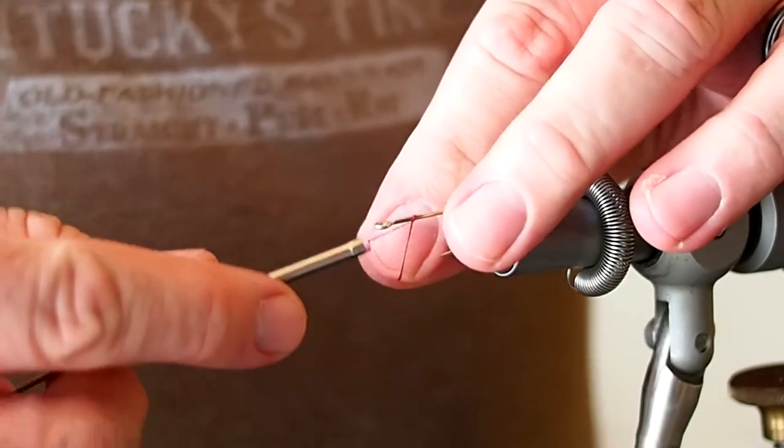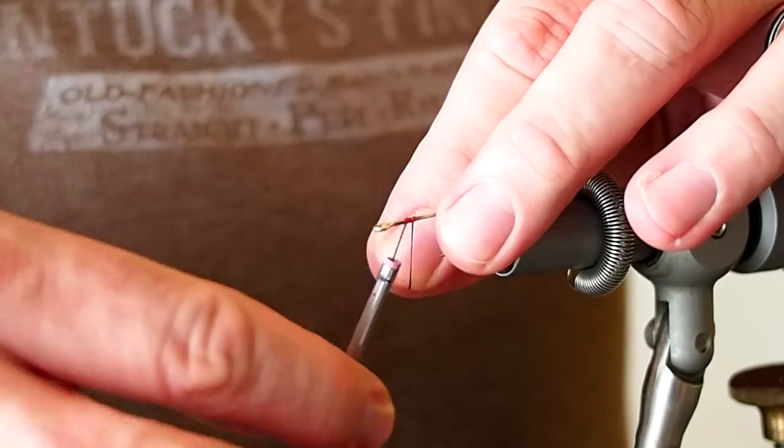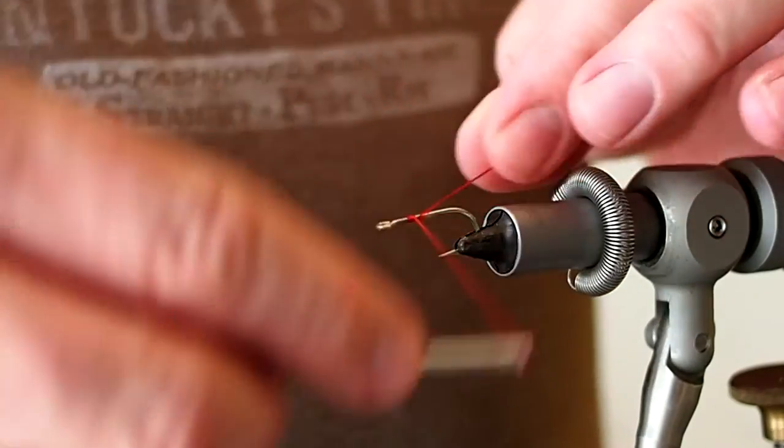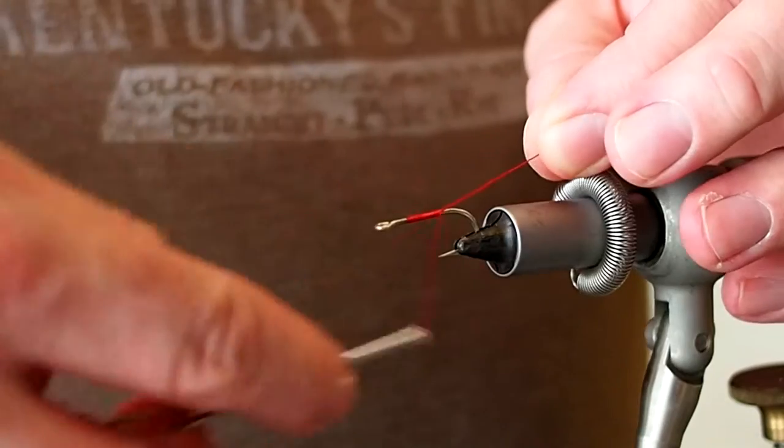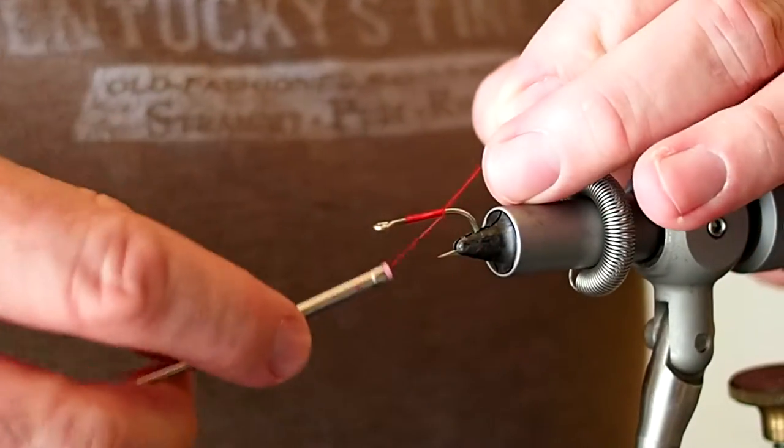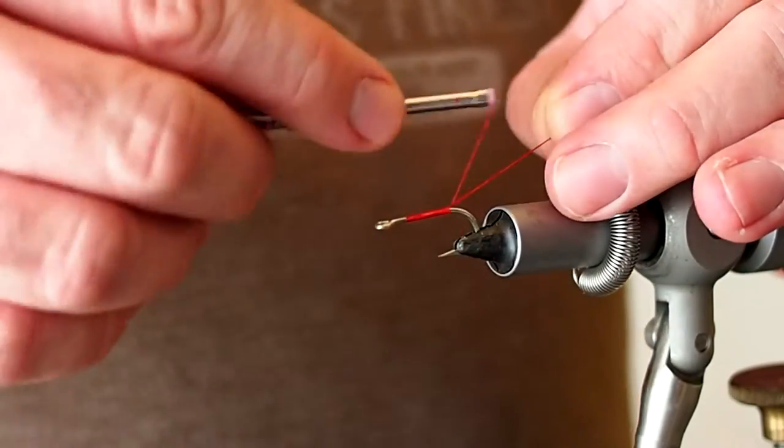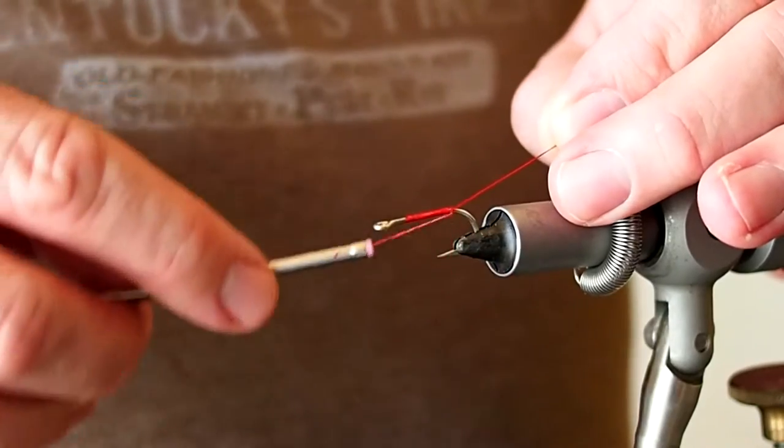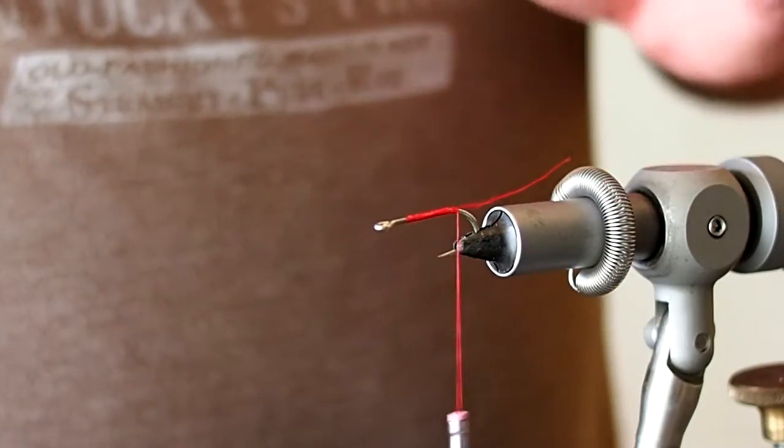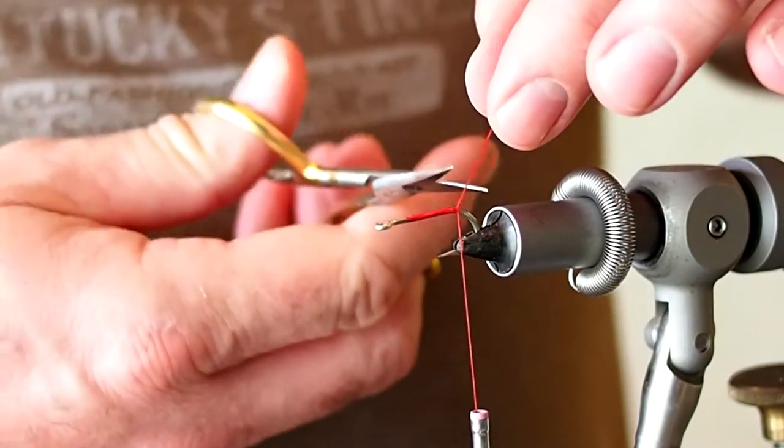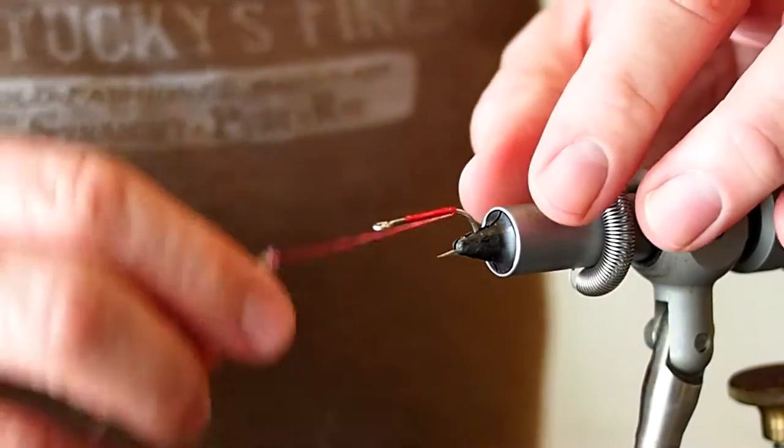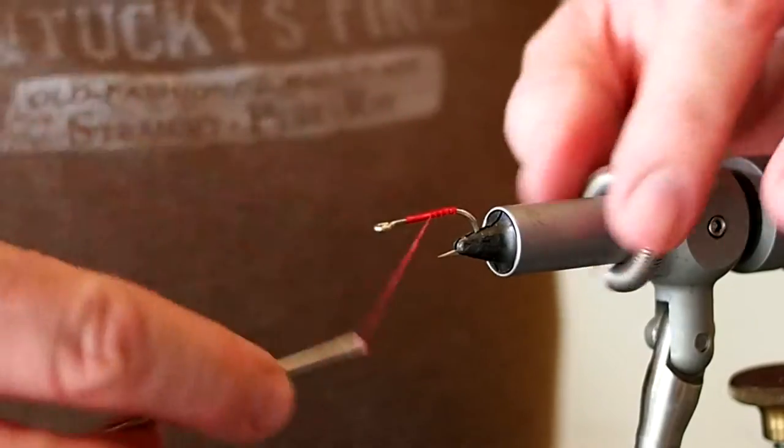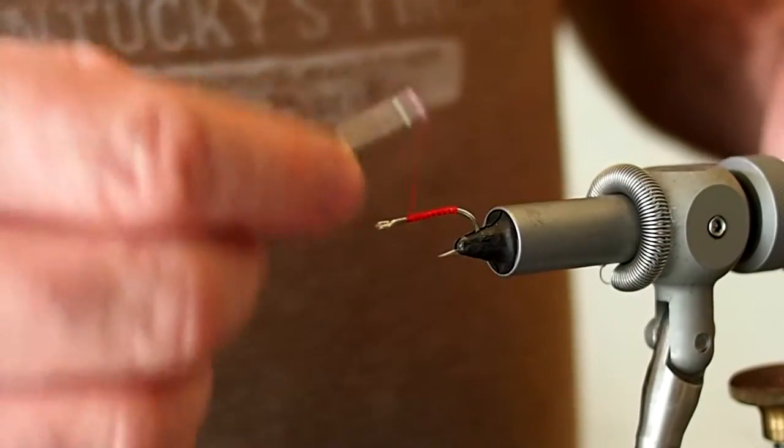I'm going to start my thread base two eye lengths behind the eye and take my thread down to the barb. I'll snip away the excess thread and bring my thread back up to our starting point.